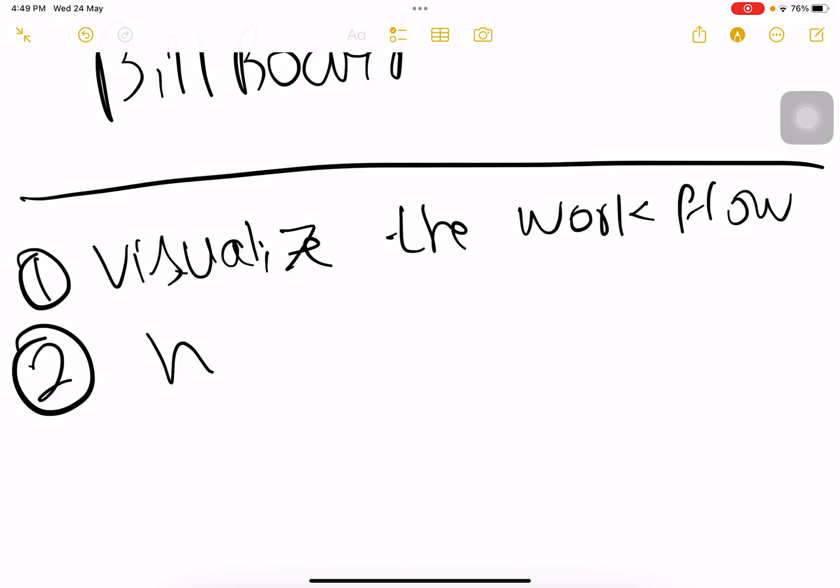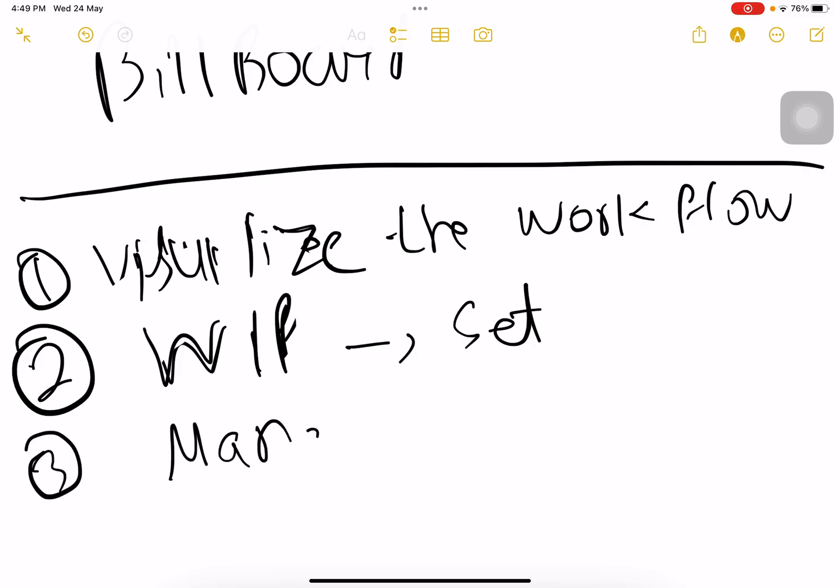Second thing is put work in progress limit - how much work you think you can do. This work in progress limit can be changed along the way, but at least you set the limit initially and keep on changing until you reach the next stage, which is the flow stage.